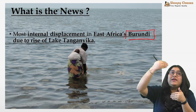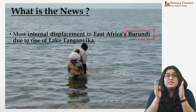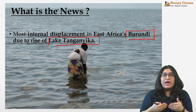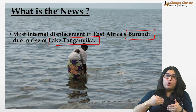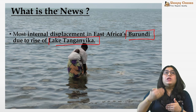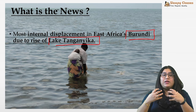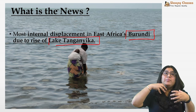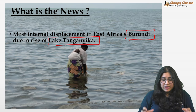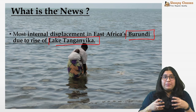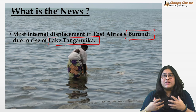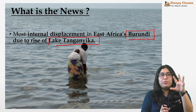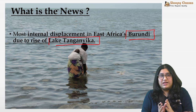बहुत ज़्यादा internal migration हो रही है। इसका reason यह है कि Lake Tanganyika में water levels बहुत ज़्यादा rise हो गया है। क्यूंकि water levels बहुत ज़्यादा rise हो गया है, so people are not able to live there anymore। देखा गया है कि बच्चे भी पानी से होते हुए school जा रहे हैं। People are actually migrating from that region — बहुत ज़्यादा internal displacement देखी गई है।